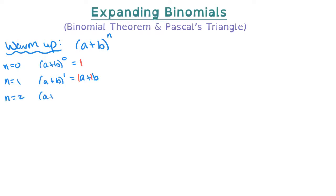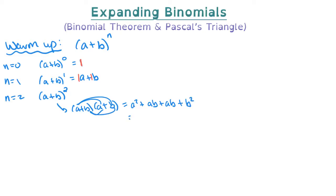n equals 2: a plus b to the 2 means a plus b times itself. If I FOIL that, I get a squared plus 1ab plus 1ab plus b squared, which gives me a squared plus 2ab plus b squared. I'm going to write this as 1a squared plus 2ab plus 1b squared, paying attention to those coefficients.